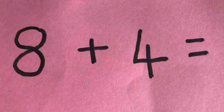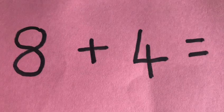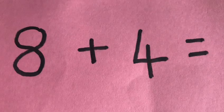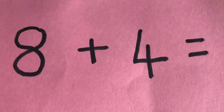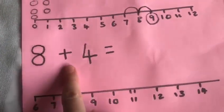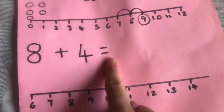Seven add two is equal to nine. Have a go at this next equation — eight add four equals. You can choose your favourite way of adding: you can use objects, you can draw the numbers, you can use a number line. Pause the video so you have time to work it out. Eight add four equals.